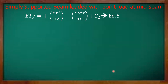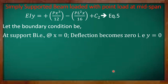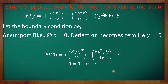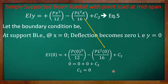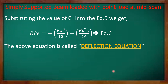To remove the constant C2, we apply the boundary condition at support B where x equals 0 and deflection y equals 0. Substituting: EI times 0 equals P(0)³/12 minus PL² times 0 divided by 16 plus C2, so C2 equals 0. The deflection equation becomes EI y equals Px³/12 minus PL²x/16.